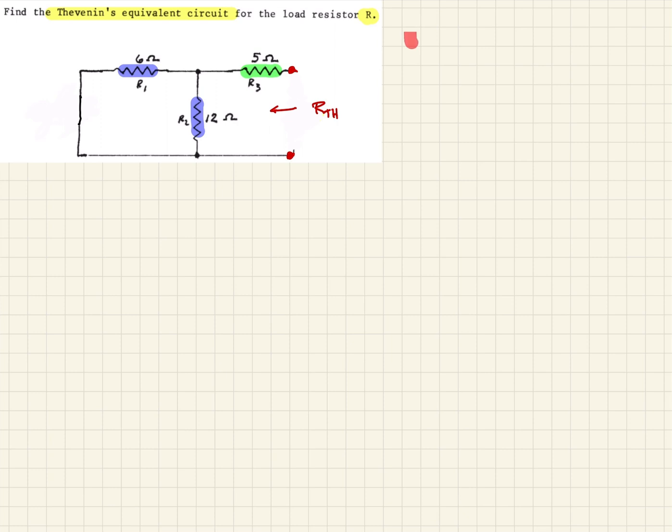So if we were to calculate our R Thevenin, what that means is we would have 5 plus, as I'm in series, 6 parallel with 12. And so we can rewrite that as 5 plus 6 times 12 over 6 plus 12. And when you calculate that out, that comes to 9 ohms. So that's our Thevenin resistance.